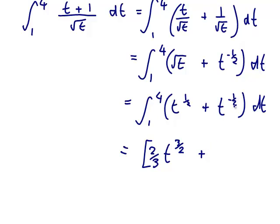Power up by 1 will be minus 1 half plus 1 would be t to the half. Divide by new power, so dividing by half is the same as times 2. And still from 1 to 4.